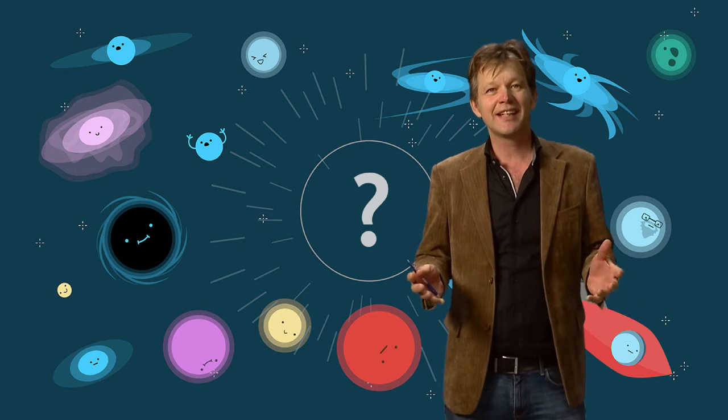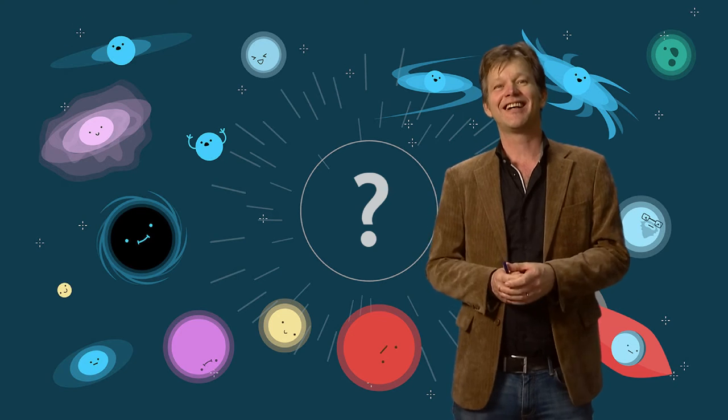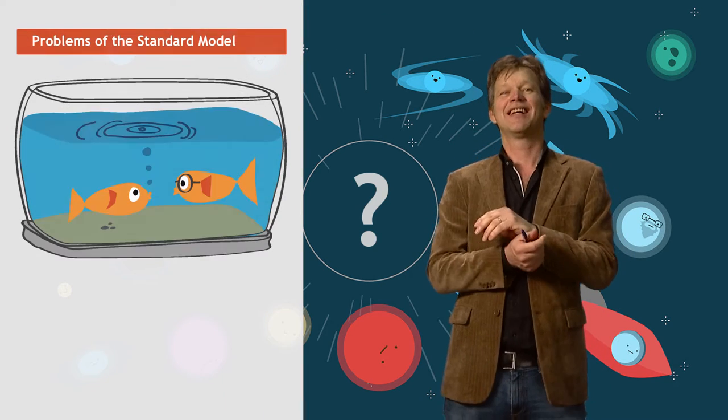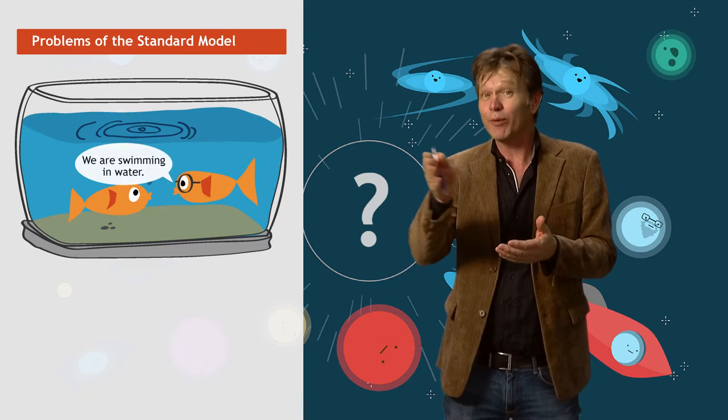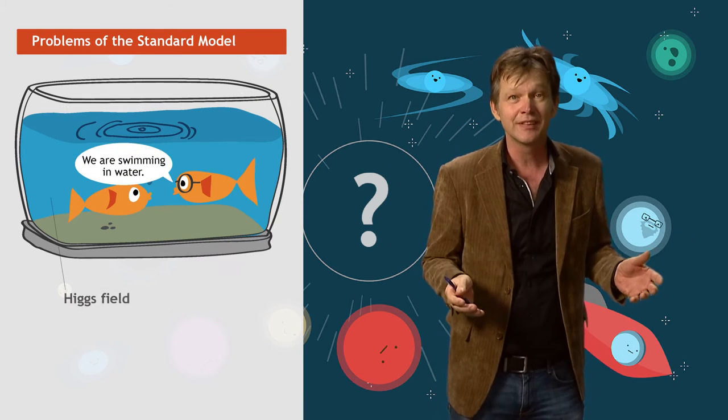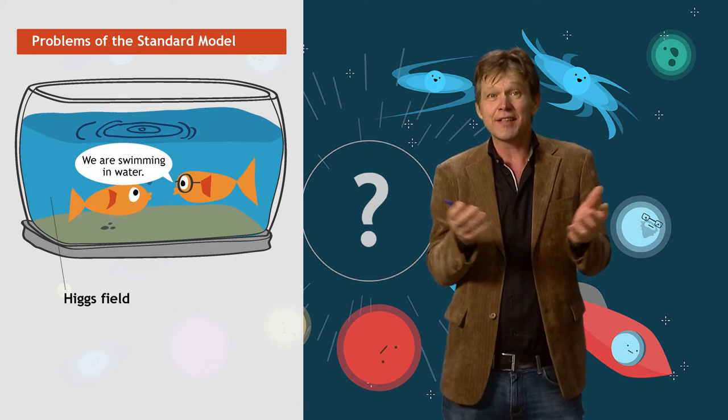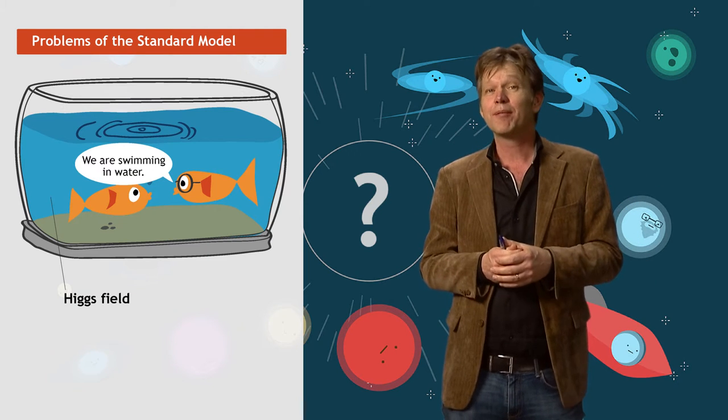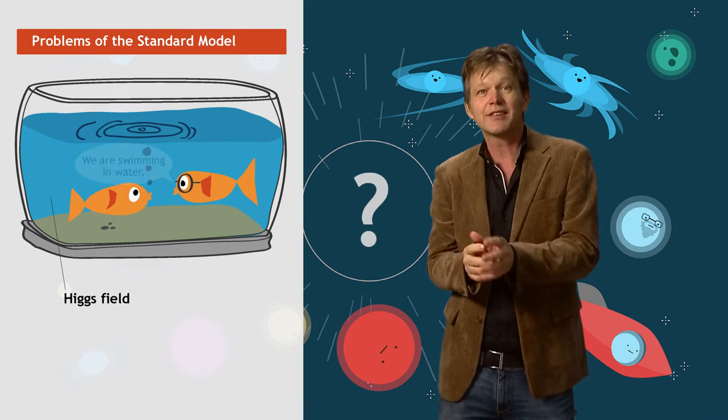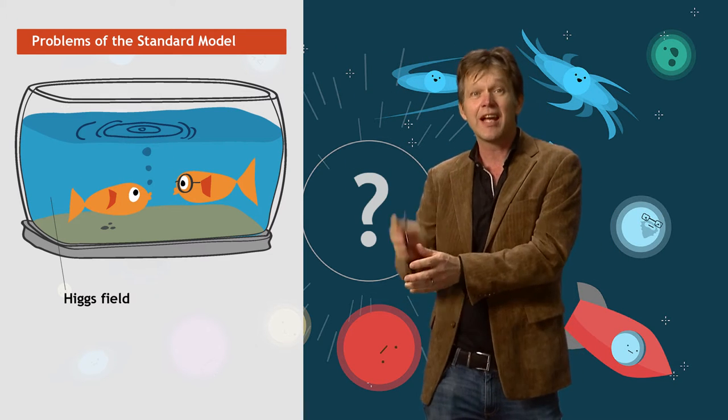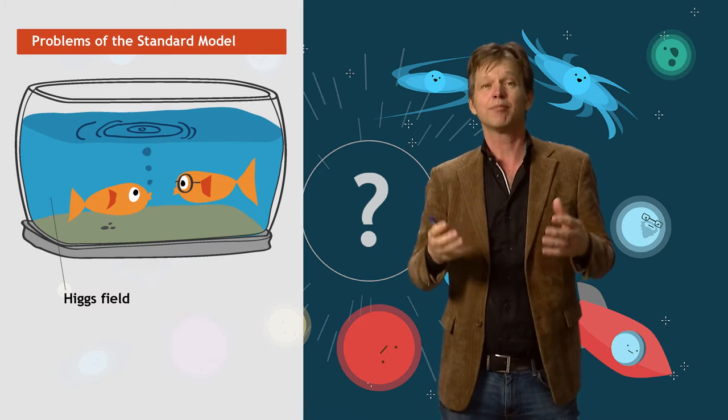Another way of saying is that we, mankind, are like fish swimming in an aquarium. And that we discovered that we are swimming in water. And the water is then the Higgs field. And how, as fish, did we discover that? Well, by observing the ripples at the surface of the water. And the water is in this analogy the Higgs field, and the ripples are then the Higgs particle.